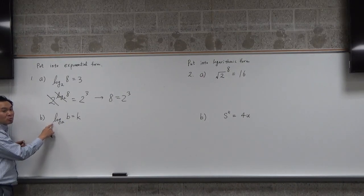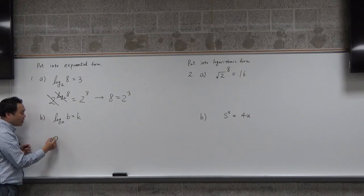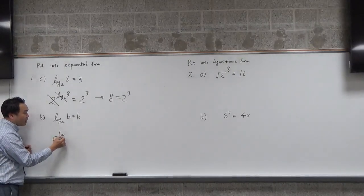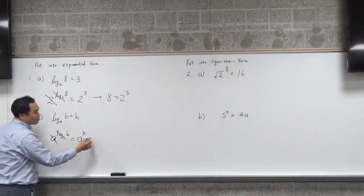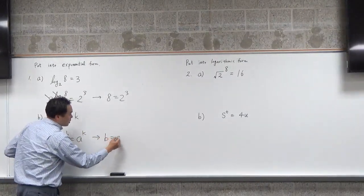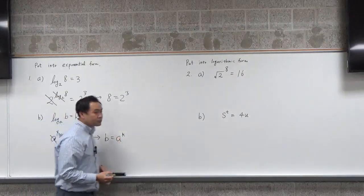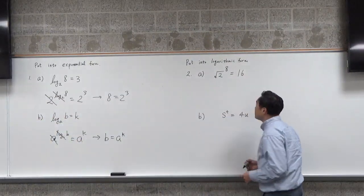Okay? So for this one, what should I do? So a to the power of log a of b equals to a to the k, right? And these cancel, and you get b equals to a to the kth power. Same idea here.